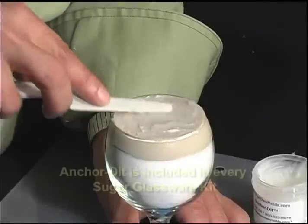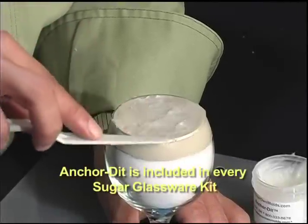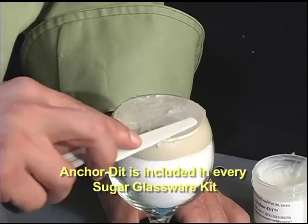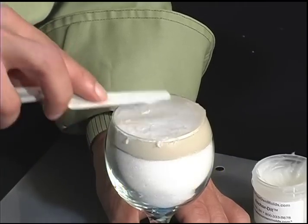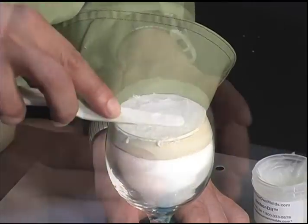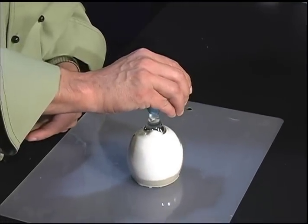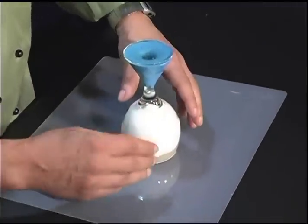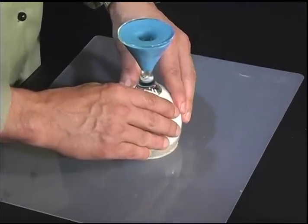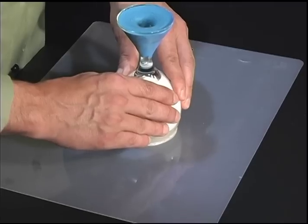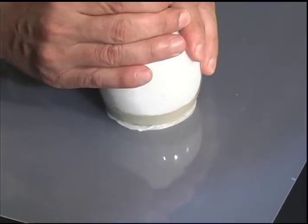Apply anchor dit about one-sixteenth of an inch thick to the top of the wine glass that has been filled flush with safety clay. Turn the wine glass upside down and press the top of the glass down onto the work surface so that the anchor dit smushes out the sides all around the perimeter of the glass.